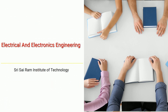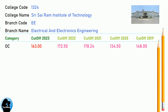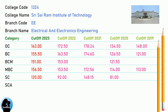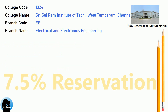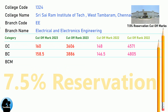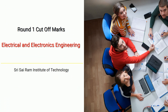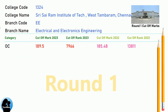DNA Cut-Off for Shri Sai Ram Institute of Technology in Electrical and Electronics Engineering. DNA 7.5 Reservation Cut-Off for Shri Sai Ram Institute of Technology in Electrical and Electronics Engineering. DNA Round 1 Cut-Off for Shri Sai Ram Institute of Technology in Electrical and Electronics Engineering.